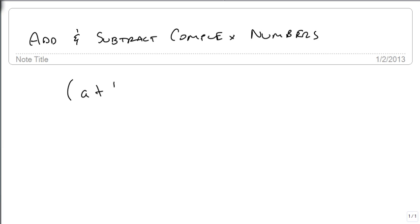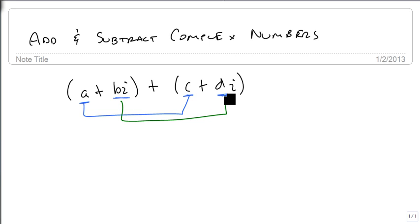So if we have a plus bi, which is a complex number, and another one, c plus di, and we were just adding these, well, we just take our a and our c, because those are like variables, and our bi and our di, because those are like complex numbers, and we add them together.